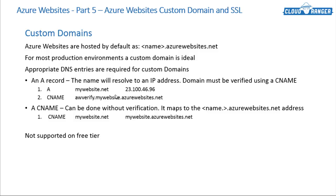Technically, when people go to mywebsite.net, they will be directed to the Azure website you have created — mywebsite.azurewebsites.net — so they do not have to use the azurewebsites.net domain any longer. It will look like it's your site, and your customers or clients will see your domain name. That was the A record method — ideally this is what you want.